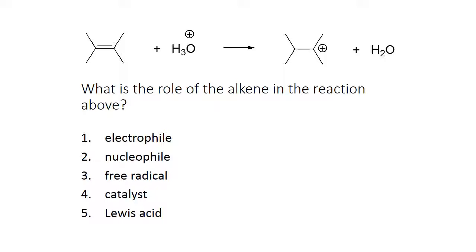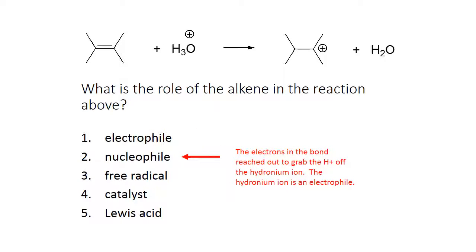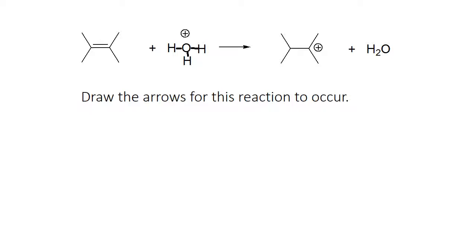In this reaction, what is the role of the alkene? The alkene is going to grab the proton, using its pi bond to do so. That pi bond is a nucleophile, so the role of the alkene is as a nucleophile. Draw in the arrows for this reaction: the pi bond grabs a proton — this is a nucleophile — and the proton on the hydronium ion is the electrophile. Those electrons reach out and grab that proton. The hydrogen cannot have two bonds, so the electrons must leave that bond to become a non-bonding pair on the oxygen.